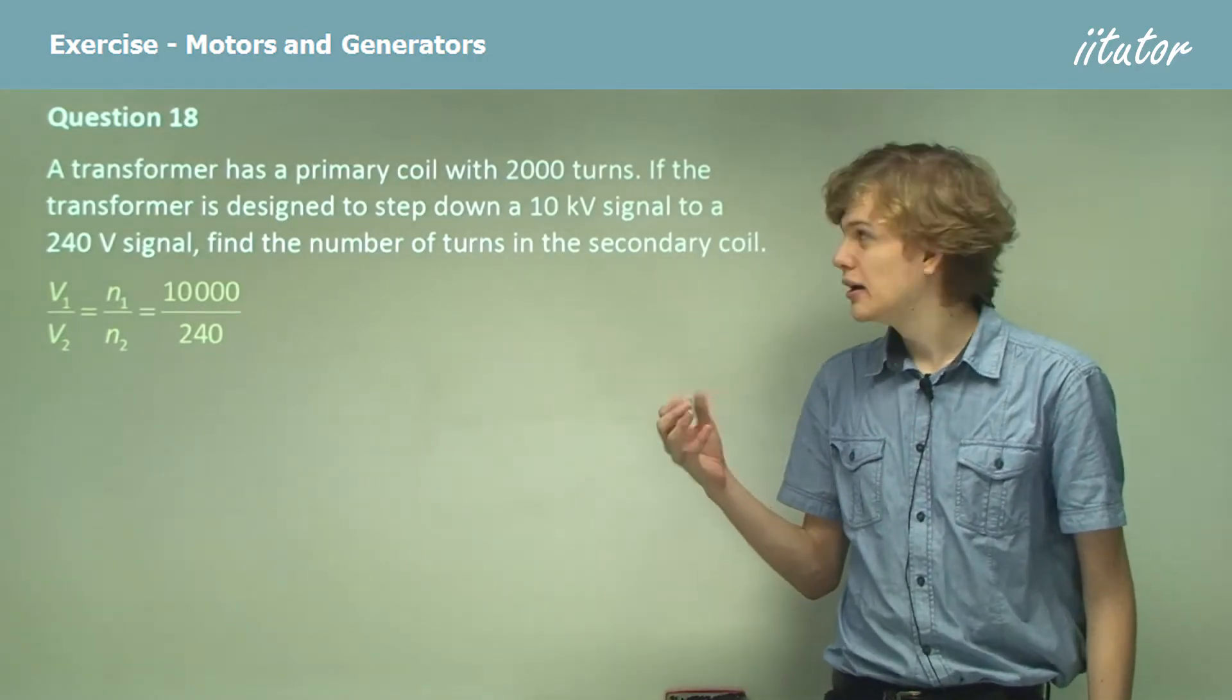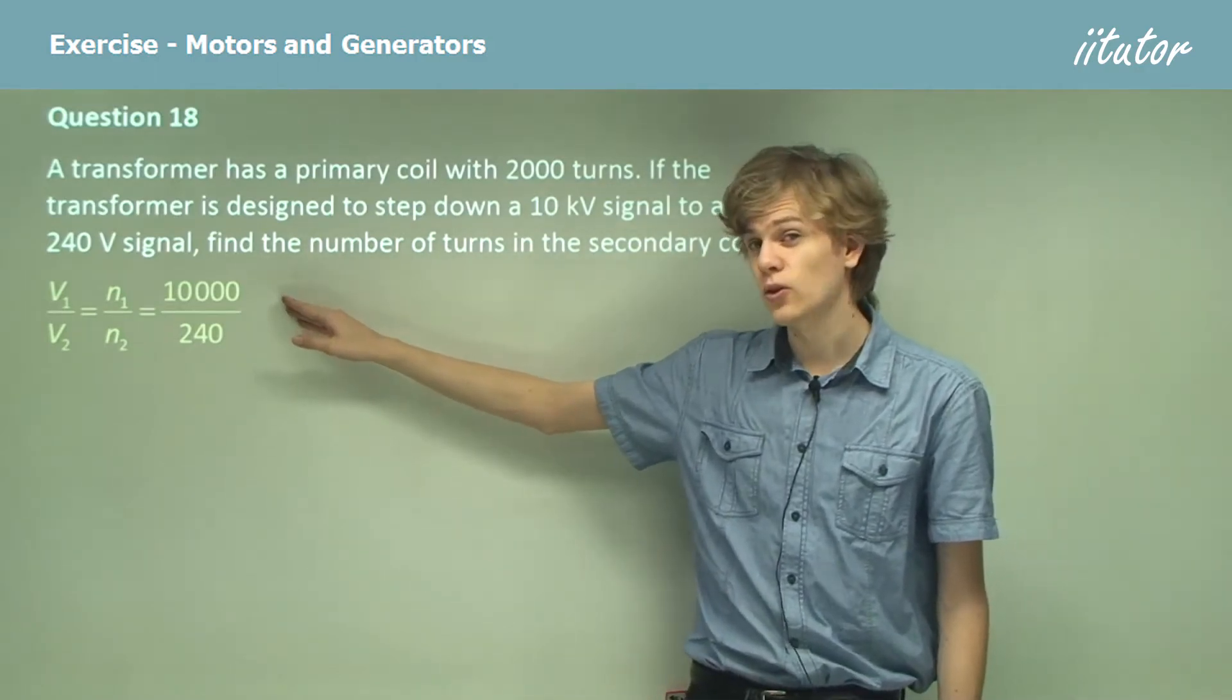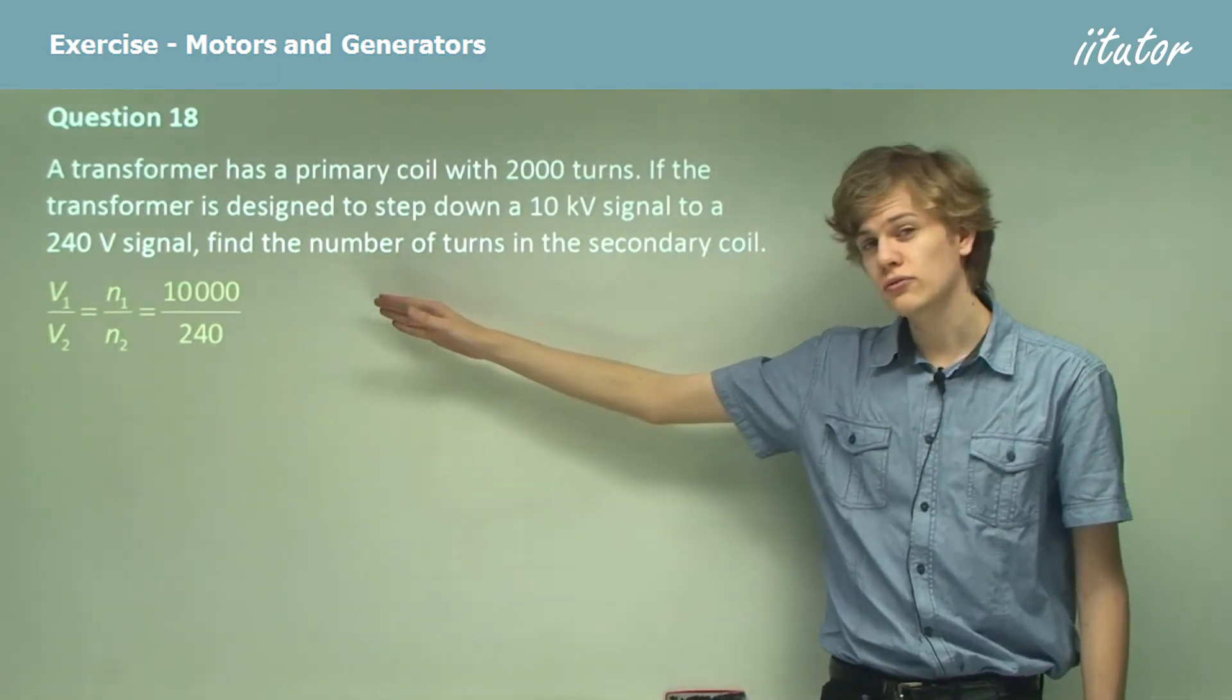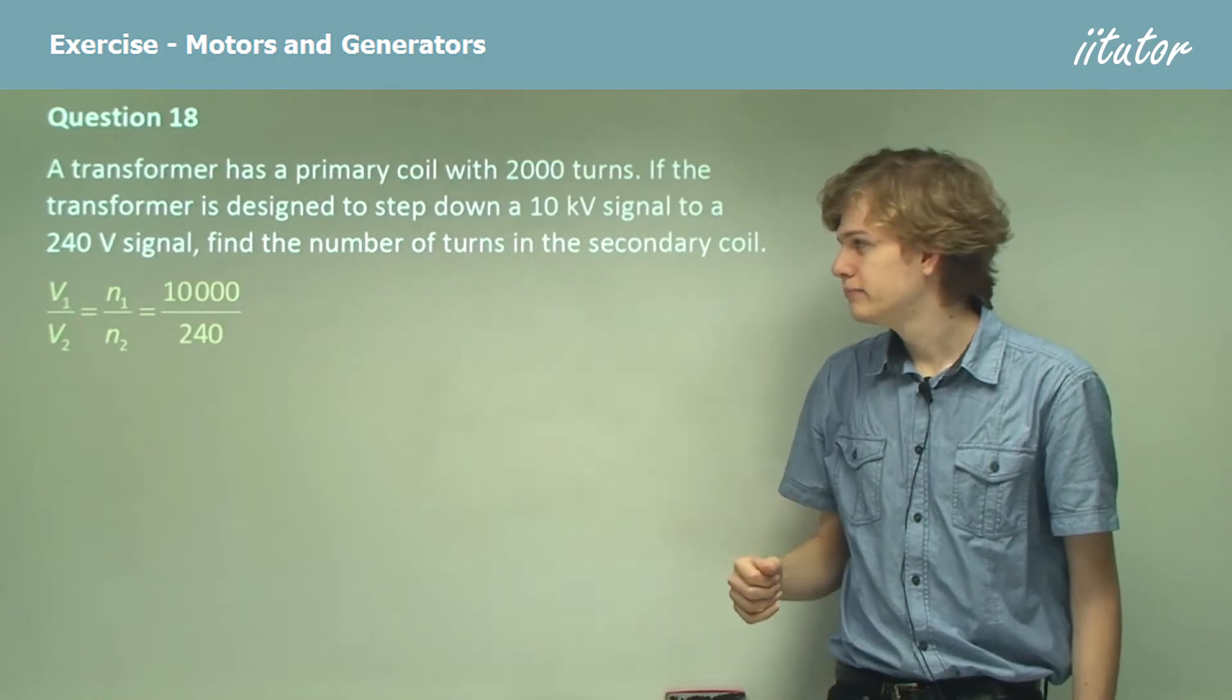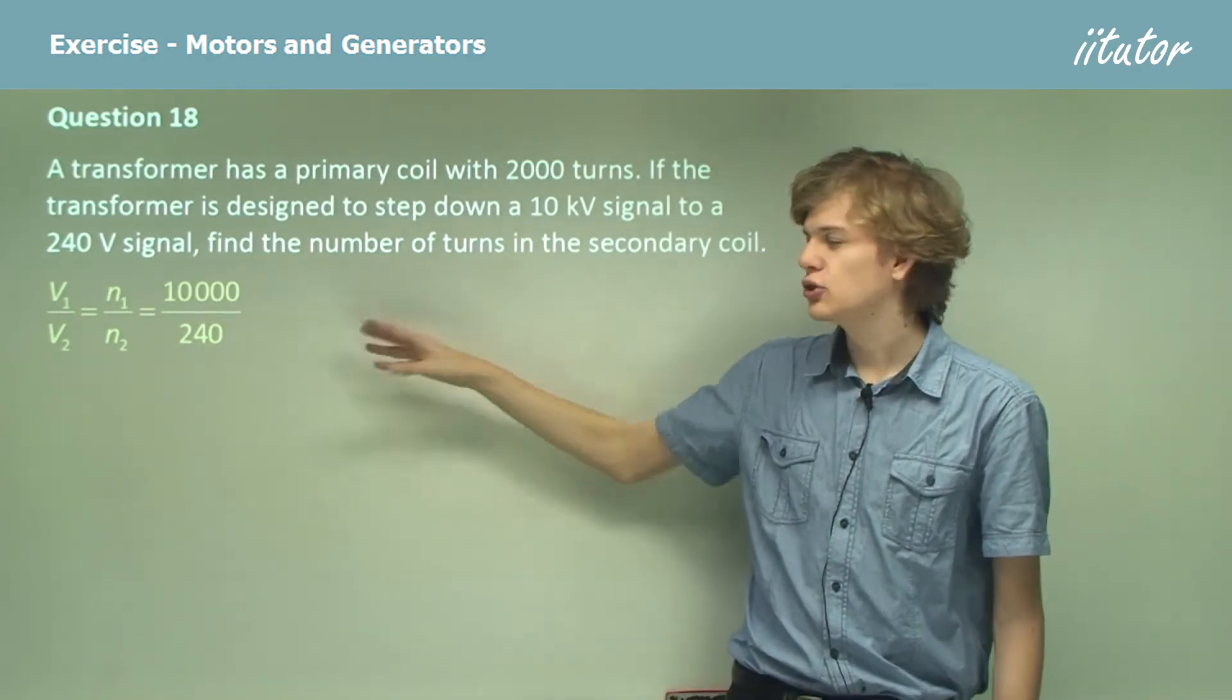And our ratio here is going to be the 10 kilovolts, that is 10,000 volts, over 240 volts. So N1 over N2 is going to be 10,000 over 240.